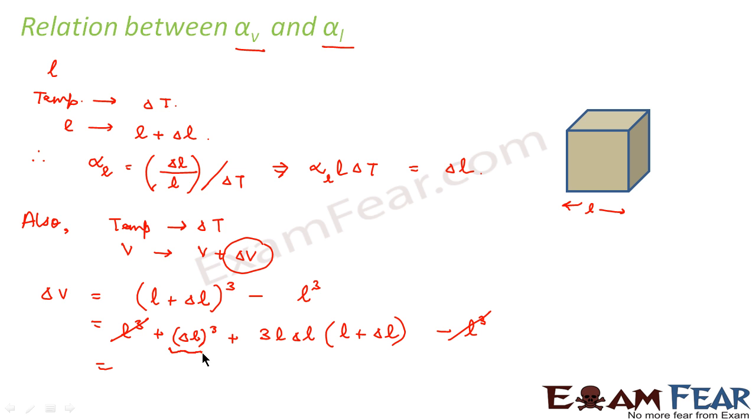Since delta l is very small, the increase in length is very small. So cube of increase in length would be almost zero. So this is neglected and considered to be zero. So this is equal to 3l times delta l times (l plus delta l). This can be written as 3l square times delta l.